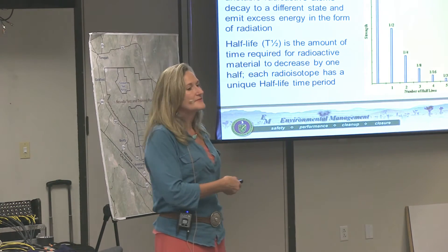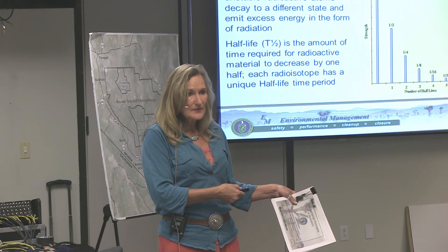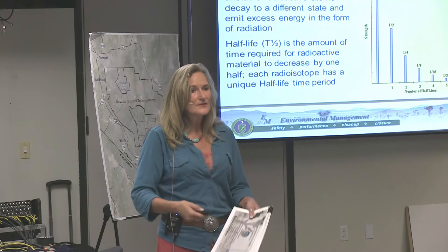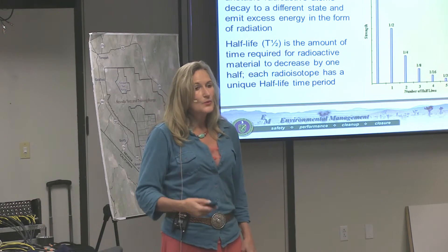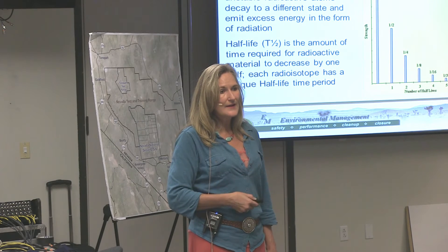Half-life is very important — it's a signature for the radioisotope. Every radioactive isotope has a unique half-life. Tritium's half-life is just over 12 years, meaning whatever amount of tritium you have, in 12 years it will be half that original amount. Starting with a thousand tritium atoms: after one half-life of 12 years you have 500; after another 12 years you have 250. The rule of thumb is about 7 to 10 half-lives and it's essentially stable — you no longer have that radioactive isotope.